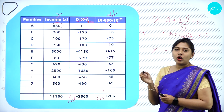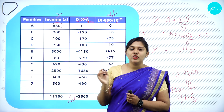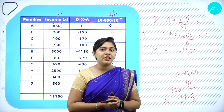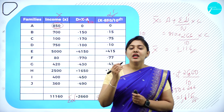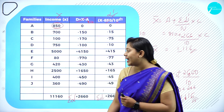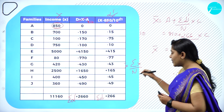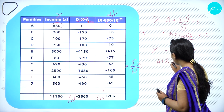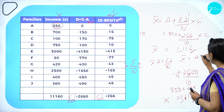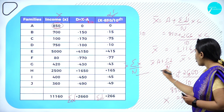In your examination, if they ask you to compute mean using step deviation method, use the formula: x̄ = a + (Σd' / n) × c. For direct method: Σx / n. For assumed mean method: a + Σd / n. For step deviation method: a + (Σd' / n) × c. These are the three formulas for individual series under ungrouped data.